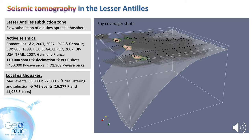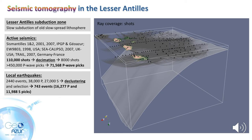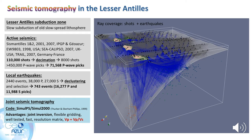For this reason, I've added data from local earthquakes, and these can sample the slab much better. I've used P-waves and S-waves from the shots and the local earthquakes to obtain a model of P-wave velocities and Vp/Vs ratio in the region. I've used a widely used seismic tomography code called Simul-PS, developed by Thurber and Eberhard-Phillips.